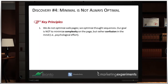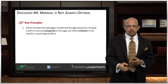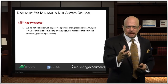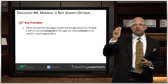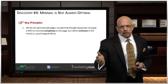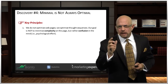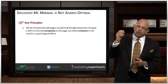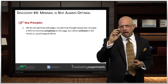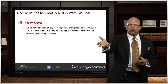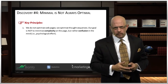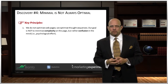We do not optimize web pages — we optimize thought sequences. Our goal is not to minimize complexity. Did you hear that? Our goal is to minimize confusion. And complexity and confusion are not identical. Complexity is a simple state; confusion is an internal condition. It is the result of something, but not necessarily complexity. Information presented in the wrong order can create confusion. A lack of information can create confusion.